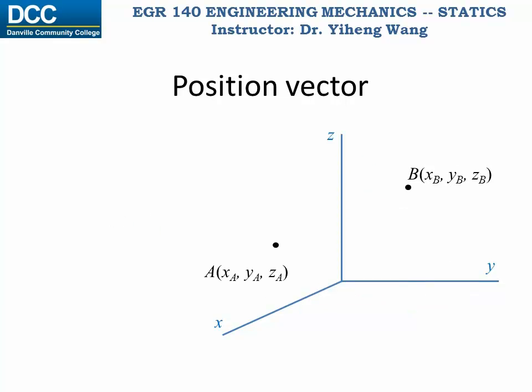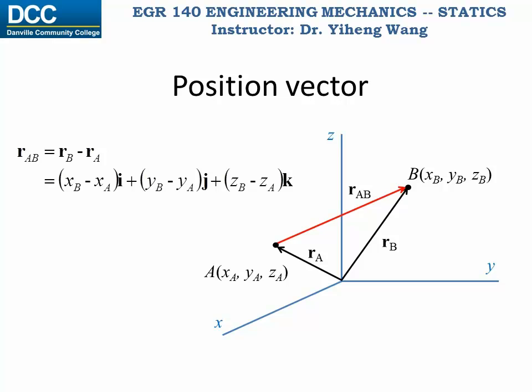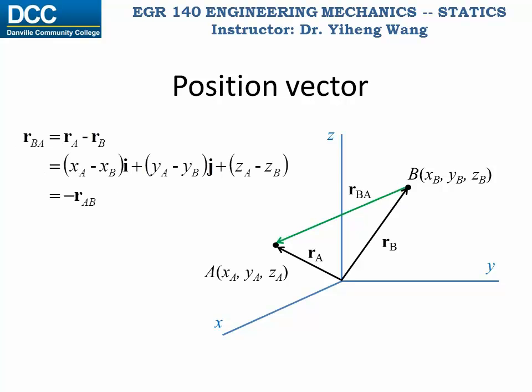If you have two points — point A with coordinates xA, yA, and zA, and point B with coordinates xB, yB, and zB — and you want to find the relative position of point B relative to point A, this relative position can be expressed by a vector RAB that starts from point A and ends on point B, and RAB equals RB minus RA. On the other hand, the relative position of point A relative to point B is expressed by the opposite vector RBA, that starts from point B and ends on point A, and RBA equals RA minus RB, which also equals negative RAB.